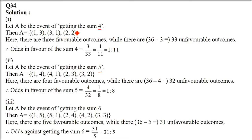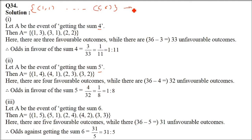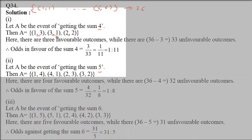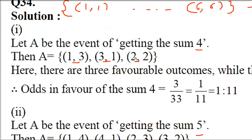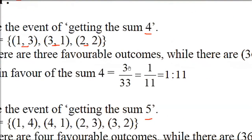The first event is getting a sum of 4. We know the sample space of two dice when they are thrown — from (1,1) till (6,6) there are 36 elementary events with 2 entries each. Getting the sum 4: the combinations (1,3), (3,1), (2,2) will only give you 4 when added. So this is how you get 4.